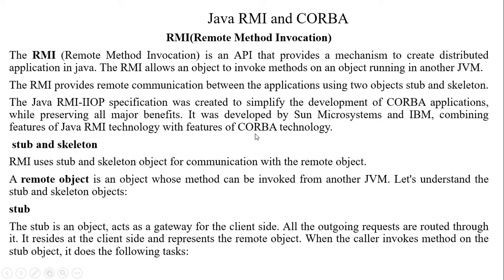So what are stub and skeleton? Two intermediate objects we use are stub and skeleton. RMI uses stub and skeleton objects for communication with remote objects. These are objects used as intermediates for communication between two systems, or between client and server.